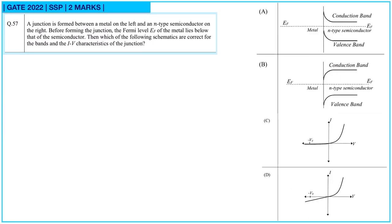Question number 57: a junction is formed between a metal on the left and an n-type semiconductor on the right. Before forming the junction, the Fermi level E_F of the metal lies below that of the semiconductor. Which schematics are correct for the bands and I-V characteristics of the junction? The metal is on the left and n-type semiconductor is on the right. Based on band theory, option A is correct for the band diagram, and the I-V characteristic also follows accordingly — so options A and C are correct.